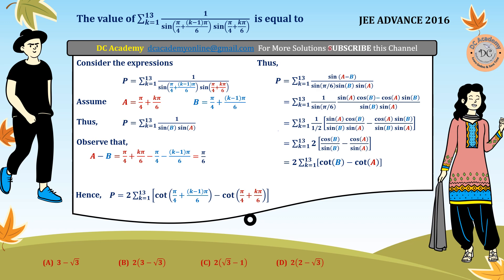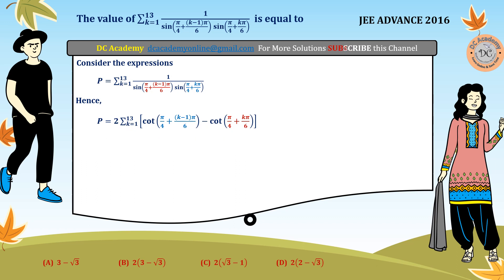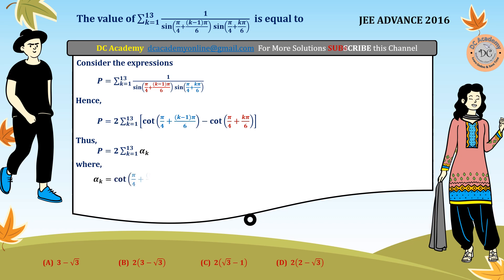We will now simplify by adding all terms from k=1 to 13. We consider the sum P as the summation of k=1 to 13 of 2·α_k, where α_k denotes the terms in the summation — that is, cot of the first angle minus cot of the second angle. We need to add α_1, α_2, α_3, ..., α_12, α_13, so we substitute k=1, k=2, k=3, and so on to write down all the individual terms.